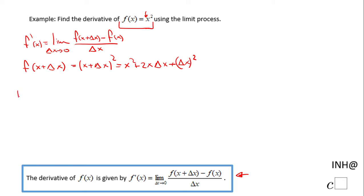And now let's go back to this f prime of x, and we have the limit when Δx approaches zero of x² + 2xΔx + (Δx)² minus f(x), which is x², over Δx, and here we notice that x² cancels out,